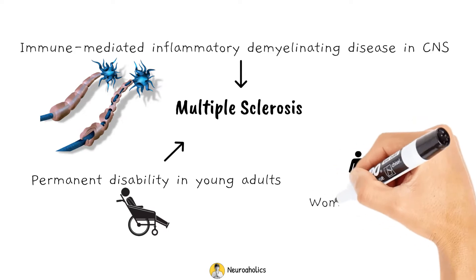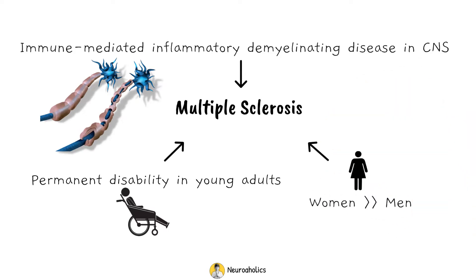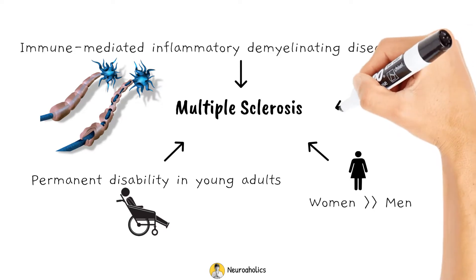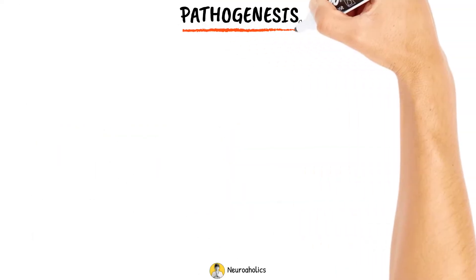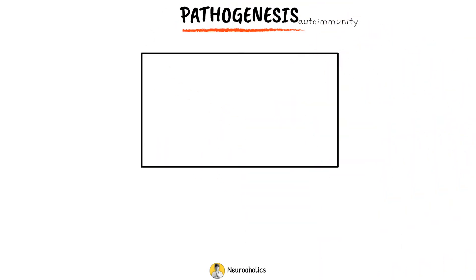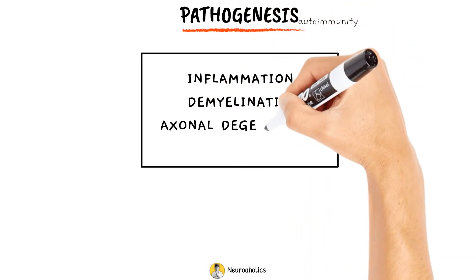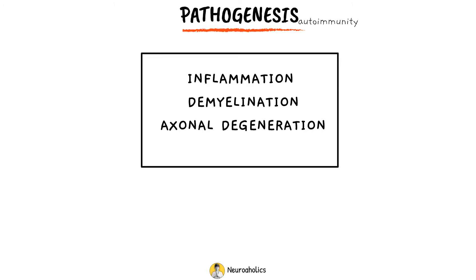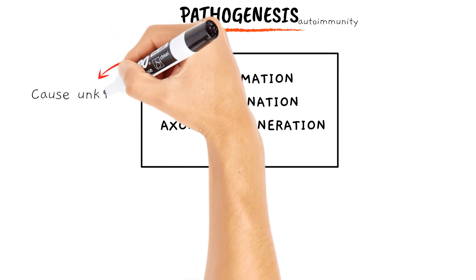MS affects more women than men. The clinical disease usually becomes apparent between the ages of 15 to 45 years. MS is a heterogeneous disorder with variable clinical and pathologic features reflecting different pathways to tissue injury. Inflammation, demyelination, and axonal degeneration are the major pathologic mechanisms that cause the clinical manifestations. However, the cause of MS remains unknown.